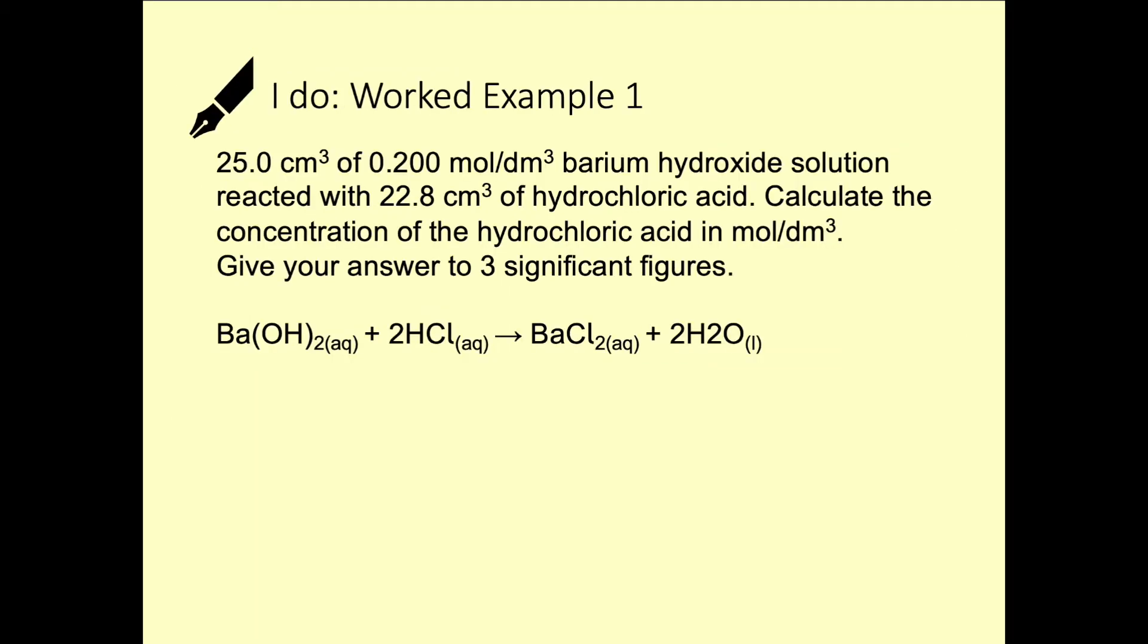The first thing that we can do is write out the ratio of the moles from the balanced equation. So using the large values that are in front of the molecules, and where there aren't numbers present, that indicates to us that there is a 1.